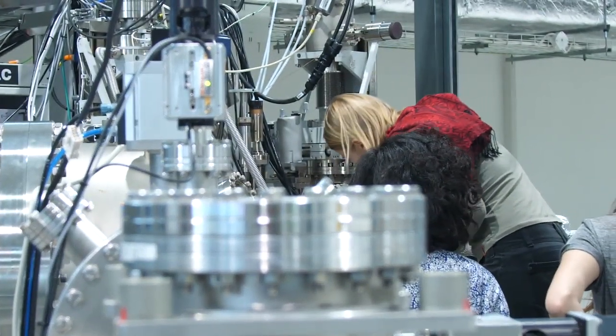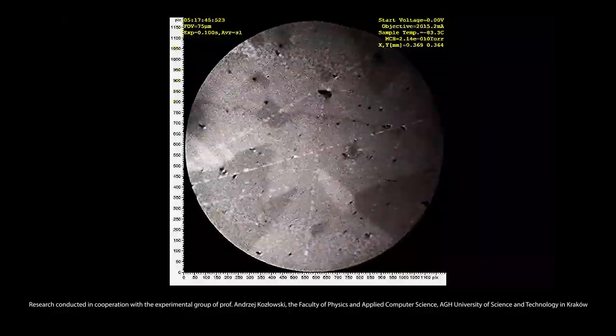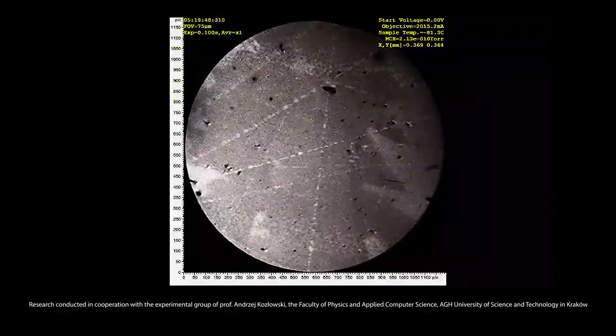This way, the Solaris Synchrotron end stations can test the chemical composition of a sample, its atomic and energetic structure, as well as electrical and magnetic characteristics.